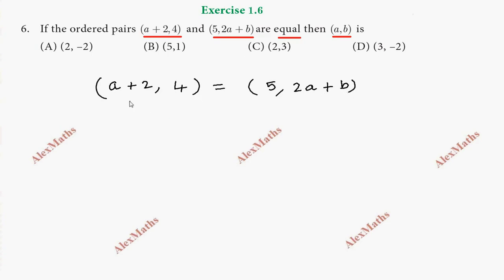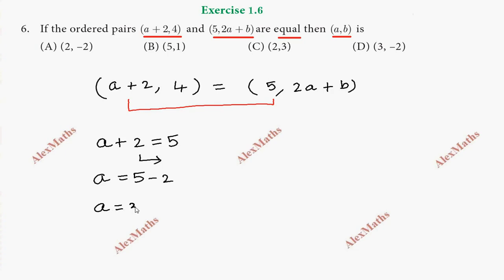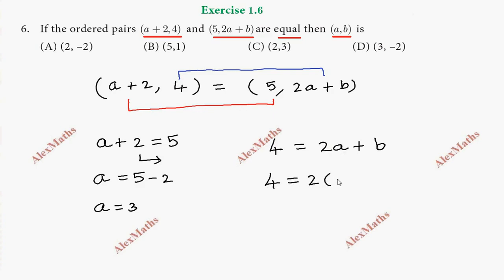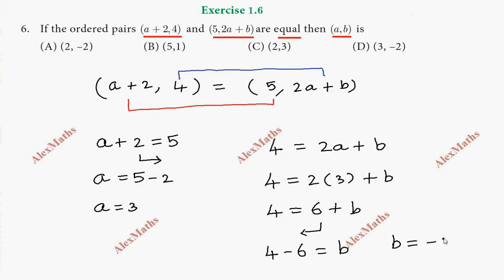So we equate both the first elements. We substitute to find the values. That gives us: 4 equals 2 times 3 plus b, which is 6 plus b. So 4 minus 6 equals b, giving b value as minus 2.